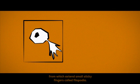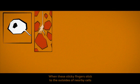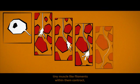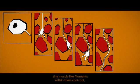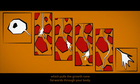First, Betsy creates a growth cone from which extend small sticky fingers called philipodia. When these sticky fingers stick to the outsides of nearby cells, tiny muscle-like filaments within them contract which pulls the growth cone forwards through your body trailing the growing axon behind it.